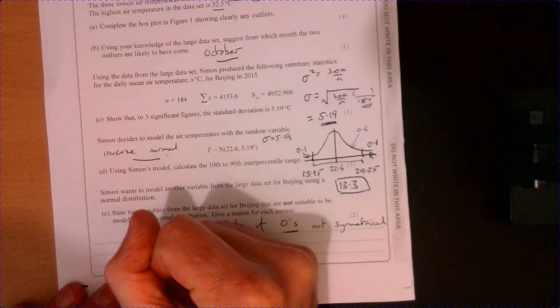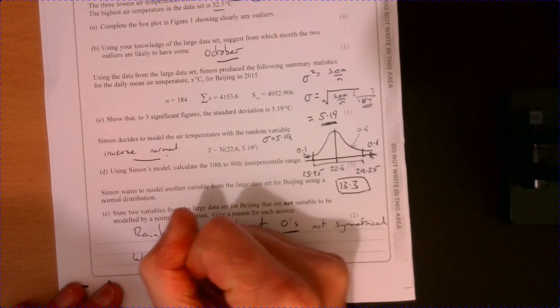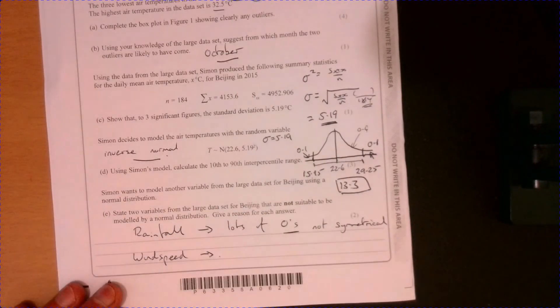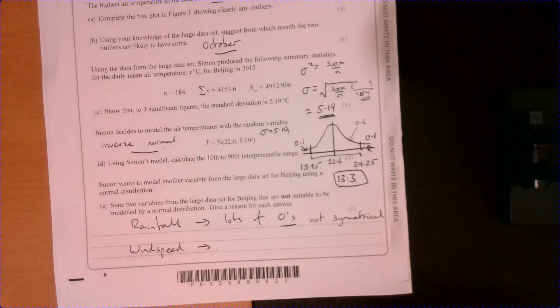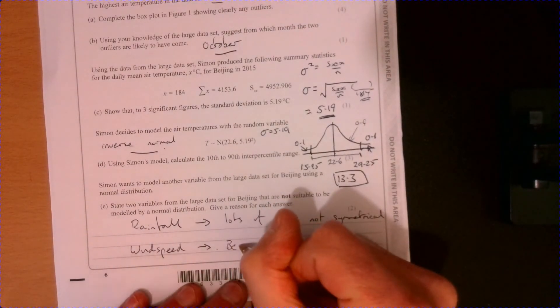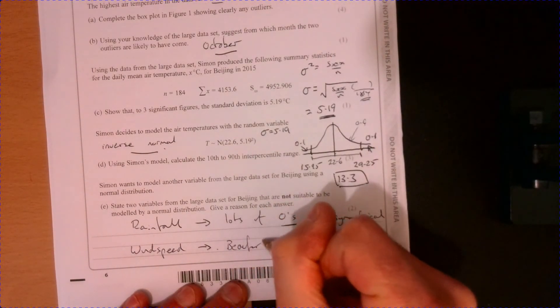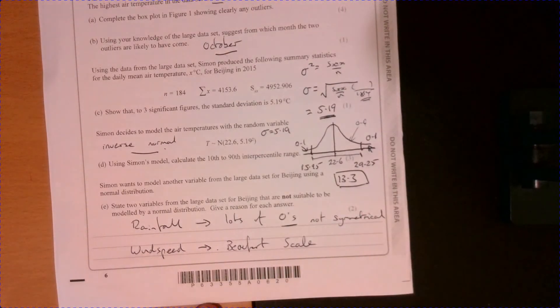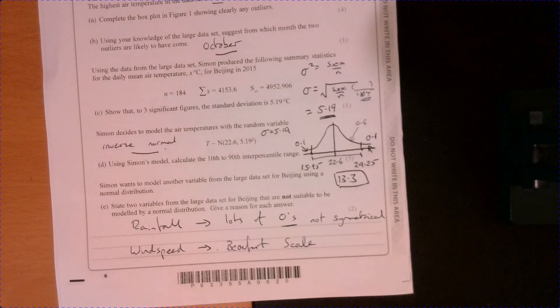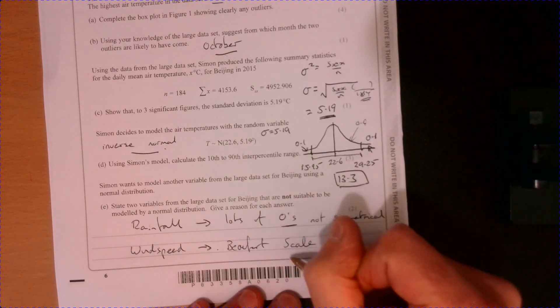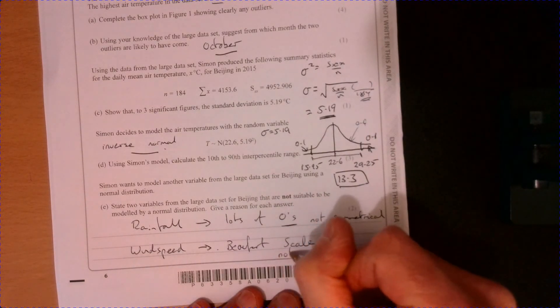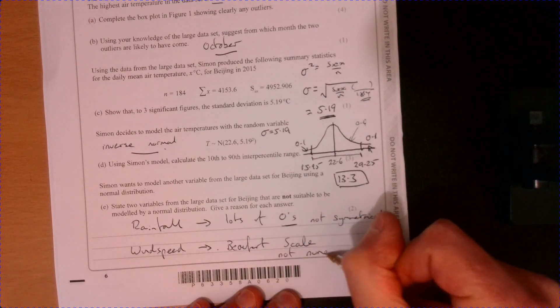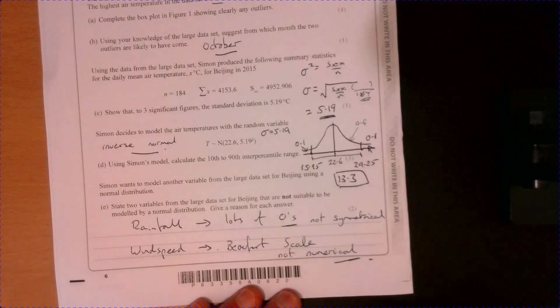And then again, the other one is, for me, most obvious would be wind speed. And because wind speed is measured on the Beaufort scale, so it's not numerical data. It might kind of look like numerical data, but it's been converted to a number. It's just been classed on that scale. So it's not numerical. There we are. Thank you.